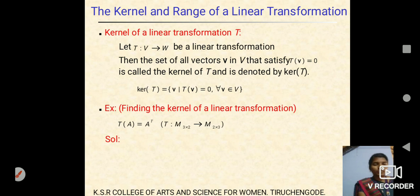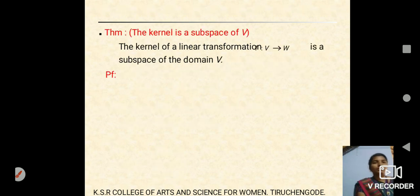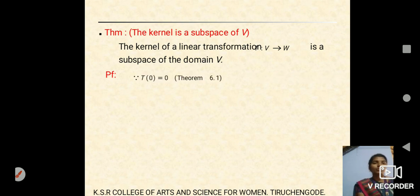Example for kernel of linear transformation: the condition is T(A) = Aᵀ. The kernel means all the set of functions that send to zero. So the kernel of T gives the zero matrix. Theorem: the kernel of a linear transformation T from vector space V into W is a subspace of domain V.